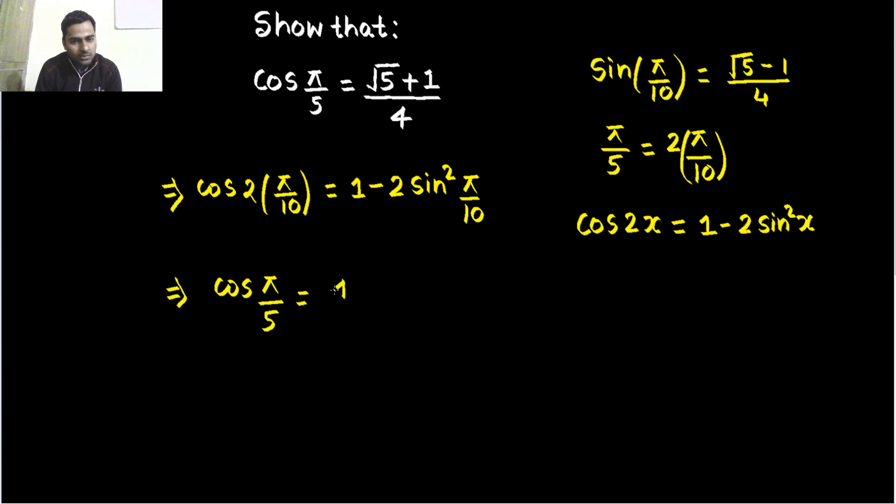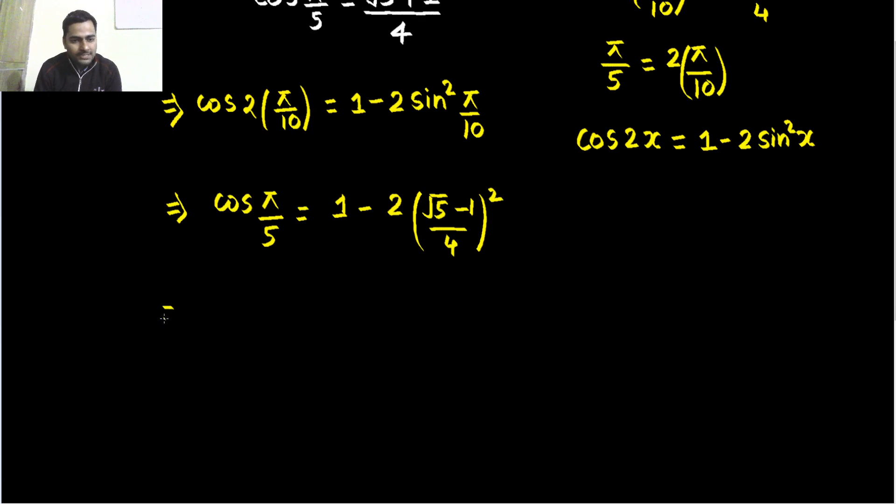Now in the next step, we can write this as cos π/5, because we have already made use of the formula. This equals to 1 minus 2. Now sin π/10 value, you know, √5 minus 1 divided by 4, just square that. Now again, cos π/5 is what we are going to discuss. So cos π/5 is 1 minus, are you happy with squaring? Square of 4 is 16, and inside, √5² is 5 minus 2√5 and plus 1.